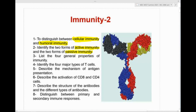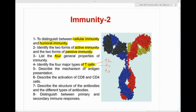We haven't talked about the difference between active and passive yet. We're also going to talk about the four general properties of immunity and the four major types of T cells — helpers, cytotoxics, suppressors — and also natural killers and NK cells.